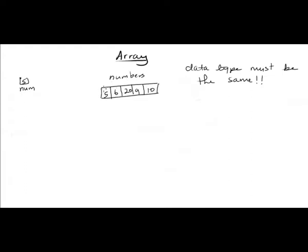If the entire array is called 'numbers,' how would the computer know where to put certain values? This is where the index comes in. The index is attached to the name of the array in square brackets so you can point to a particular location inside the array. This first location is called numbers[1], the second is numbers[2], and so on through positions three, four, and five.